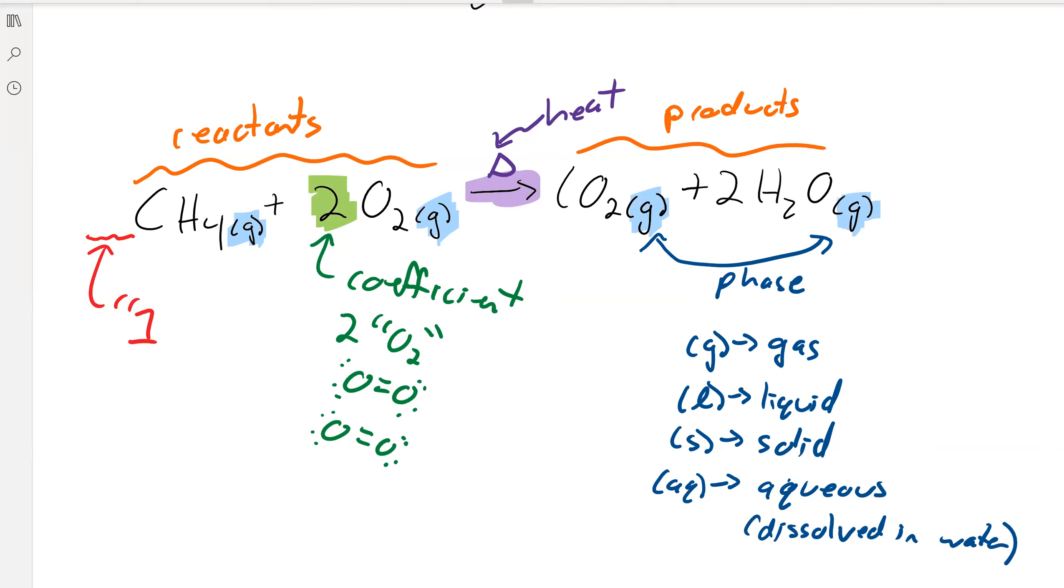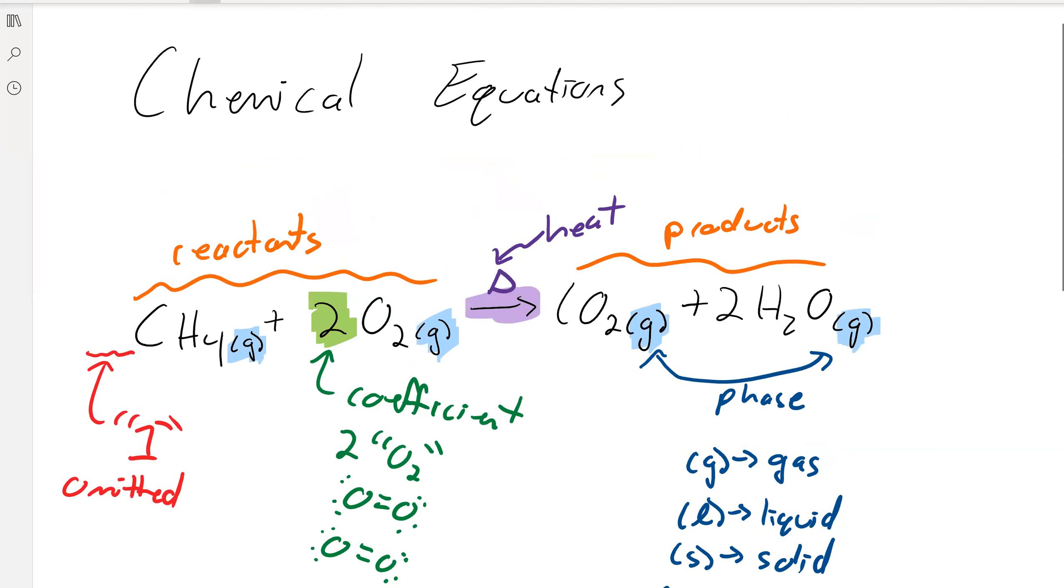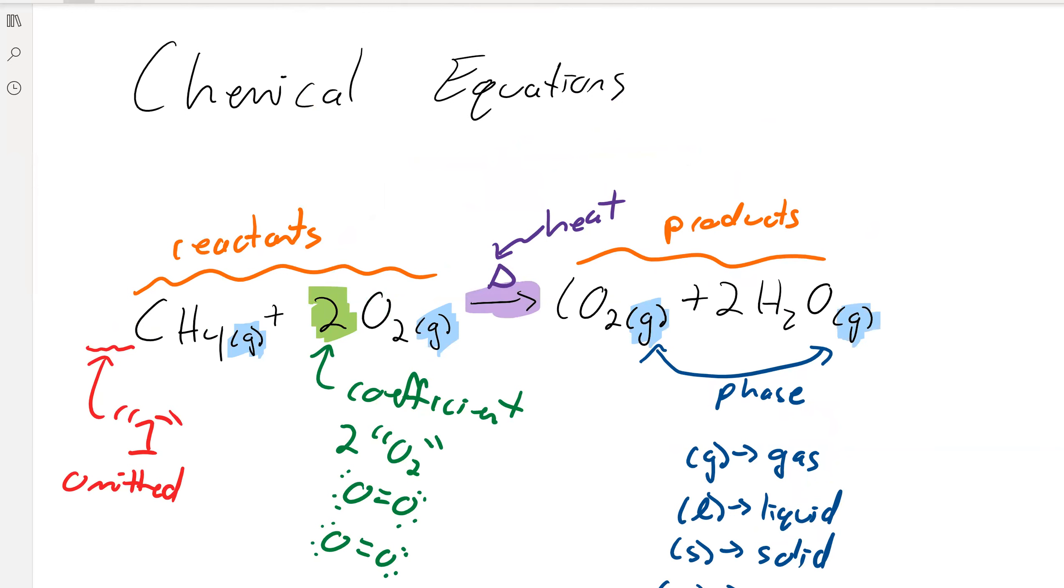If there's no coefficient in front, that means that you have a one there, and the one is generally omitted. So if there's no number in front, that means that it's actually just a one.